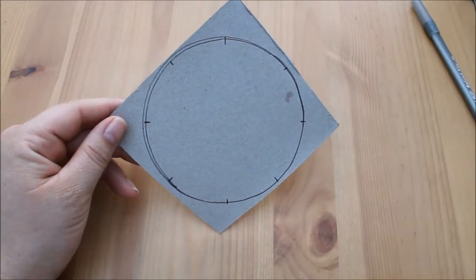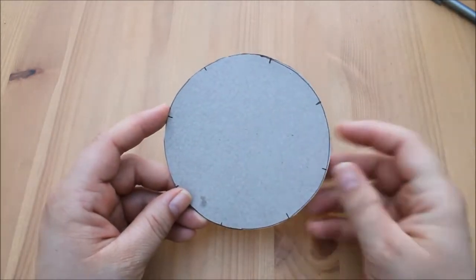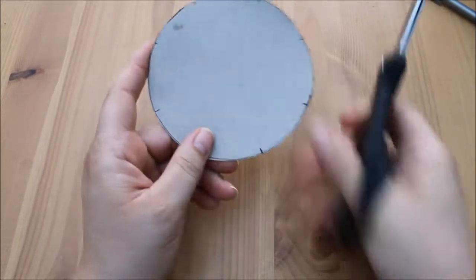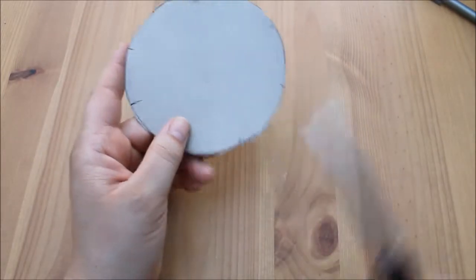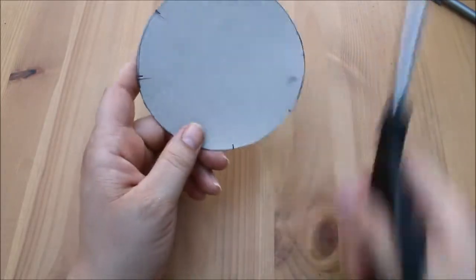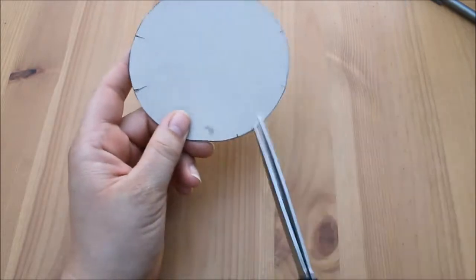So I've got my circle and we now want to just snip into each of these eight points that we've marked off. So we take our scissors and just snip into each of the eight marks that we've made around the edges. It doesn't matter if it's not perfect, it will still have the same effect.